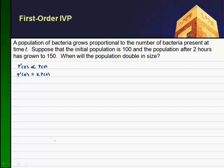Suppose that the initial population is 100. So the population at time T equals 0 is going to be 100. And the population after two hours has grown to 150, so P(2) is 150. The question we want to ask is when will the population double? So P at T equals what time will the population be 200 if we start off with 100.